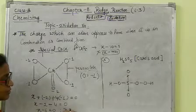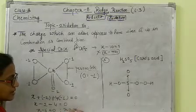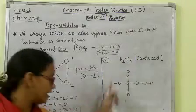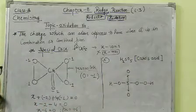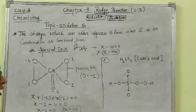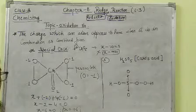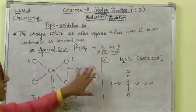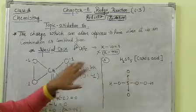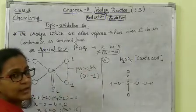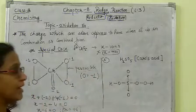So X equals plus 6. That means chromium in CrO5 has an oxidation state of plus 6, not plus 10. This is a special case where we need to focus on the structure, because some compounds have oxygen-oxygen peroxide linkages that change the oxidation number of oxygen from minus 2 to minus 1.